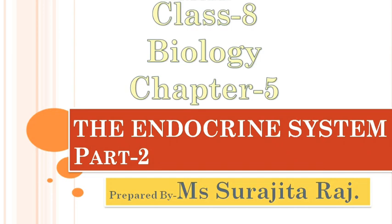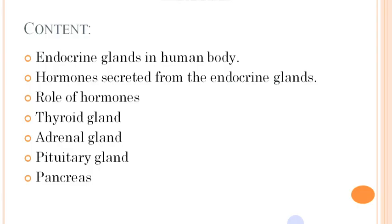Hello everyone, this is Surajita Raj, going to discuss the chapter endocrine system. In this chapter, we will discuss the various endocrine glands in the human body and the hormones secreted from them, then the role of the hormones secreted from the thyroid gland, adrenal gland, pituitary gland, and pancreas.